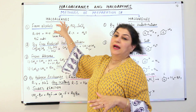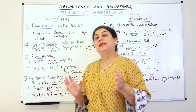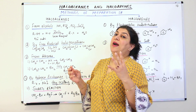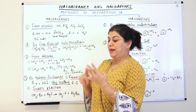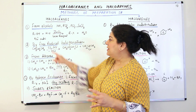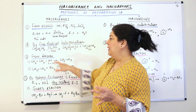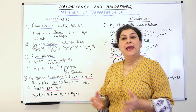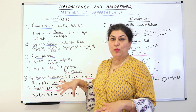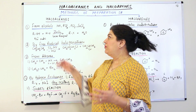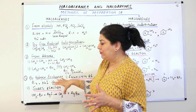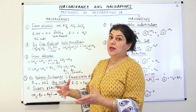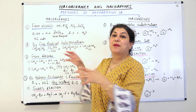Let us first come to Haloalkanes and the different methods of preparation. There are 4 different methods: the first is from alcohols, the second is by free radical halogenation, the third is from alkenes, and the fourth method is by halogen exchange. I will make this a quick video because I have already explained each one of these in detail in the previous videos, so I would encourage you to watch those.